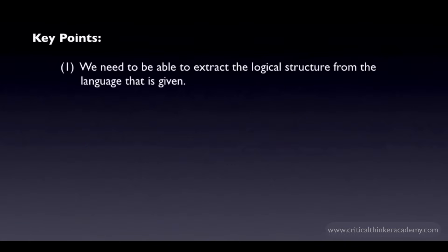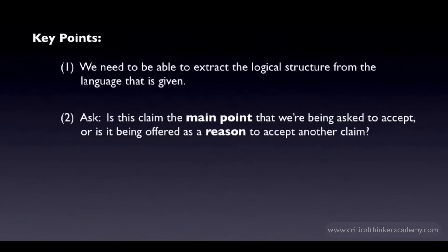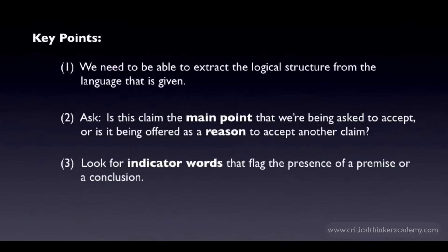Arguments in natural language usually aren't presented in standard form, so we need to know how to extract the logical structure from the language that's given. To do this, we look at each of the claims in the argument and ask ourselves: is this the main point the arguer is trying to convey, or is this being offered as a reason to accept some other claim? The claim that expresses the main point is the conclusion. The claims functioning as reasons to accept the main point are the premises. And finally, premises and conclusions are often flagged by the presence of an indicator word — paying attention to indicator words can really help simplify the task of reconstructing an argument.